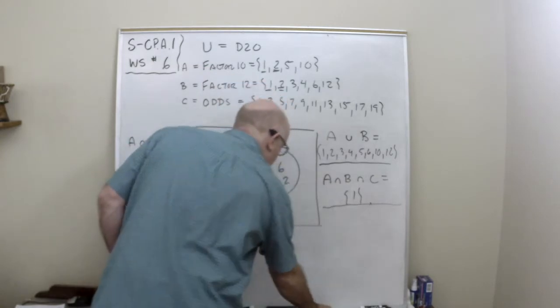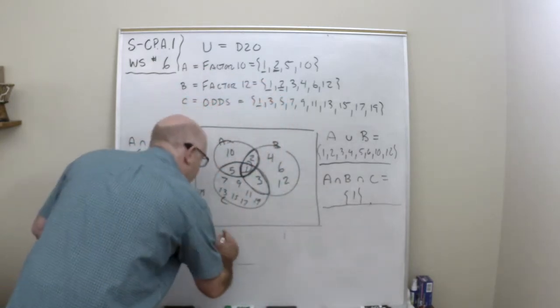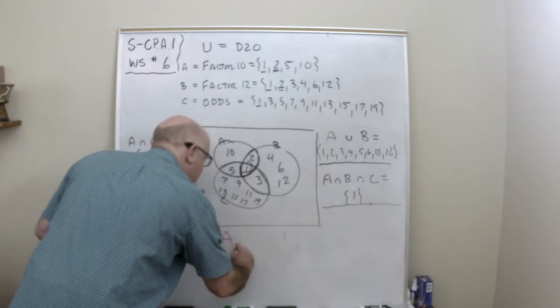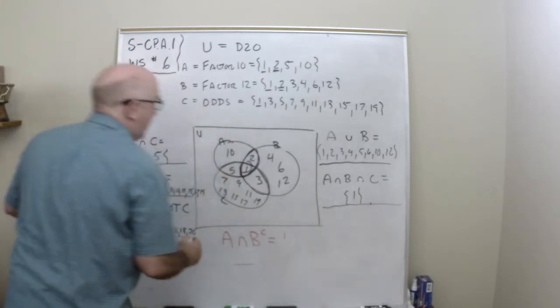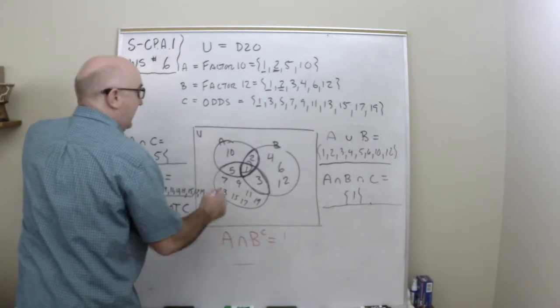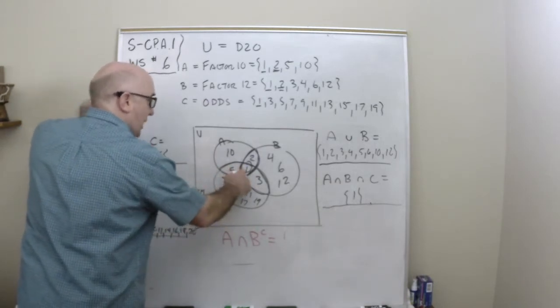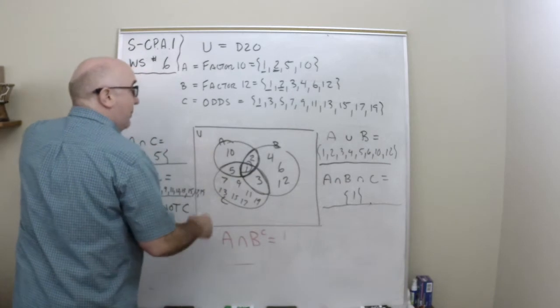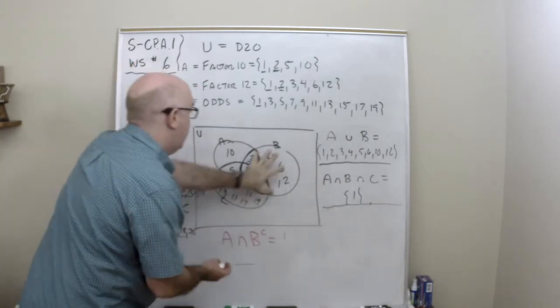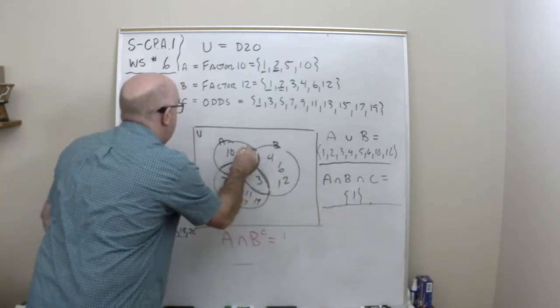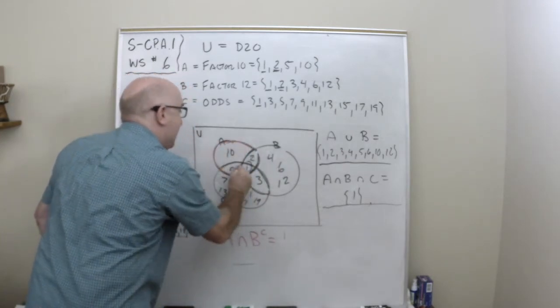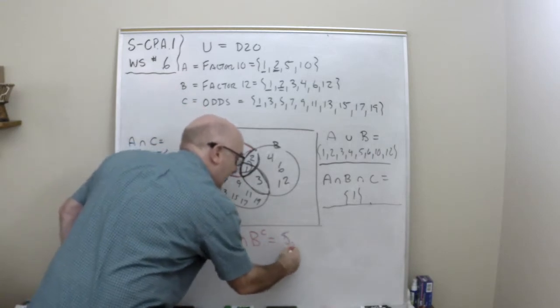Now what are the things—let's do another one. What are the things in A and not in B? So I want to be in A, it has to be in A which is 1, 2, 5, and 10, but it can't be in B. So the things that are in A and not in B are the 5 and the 10.